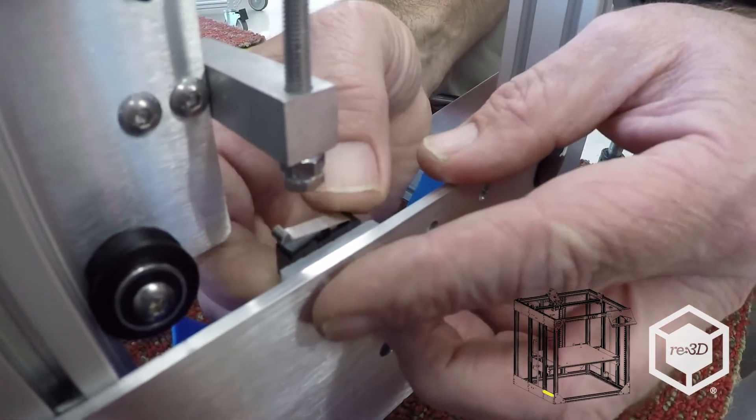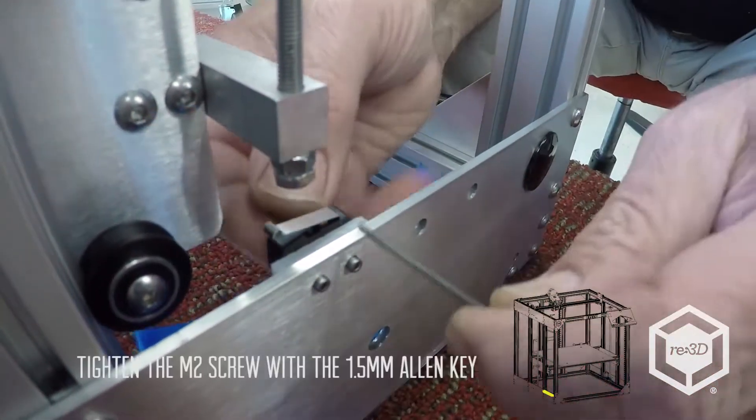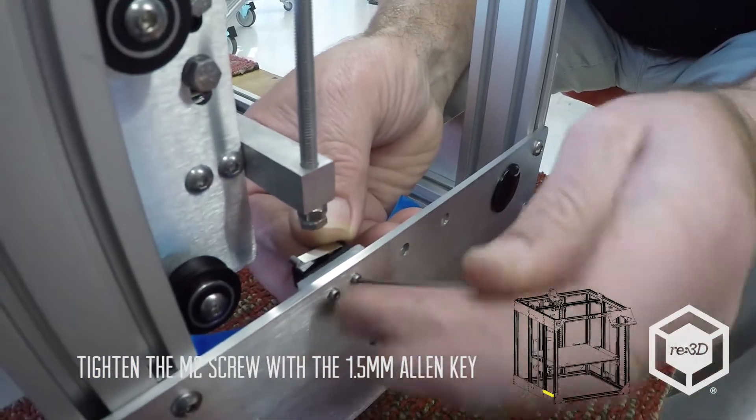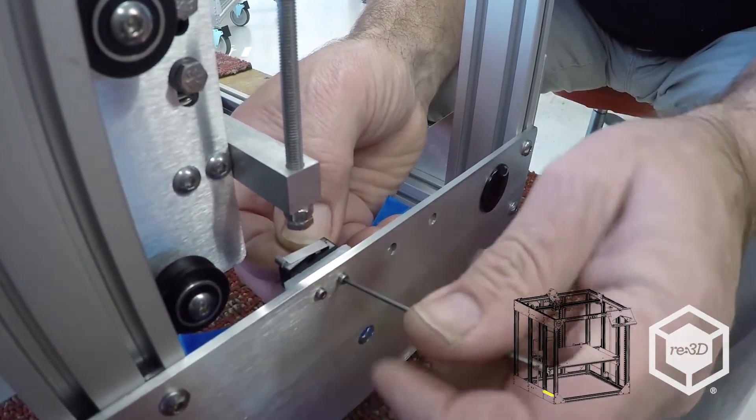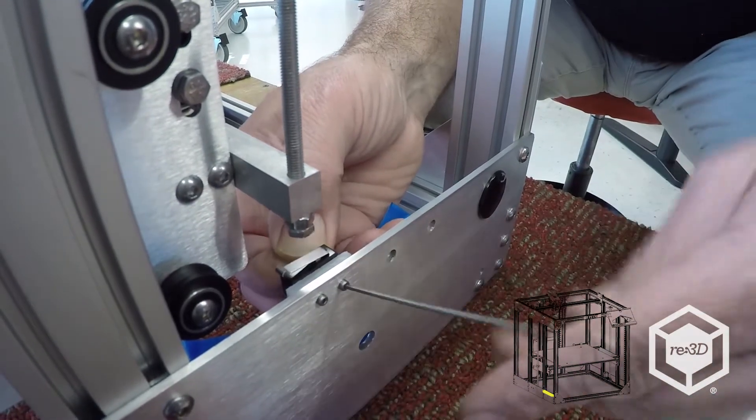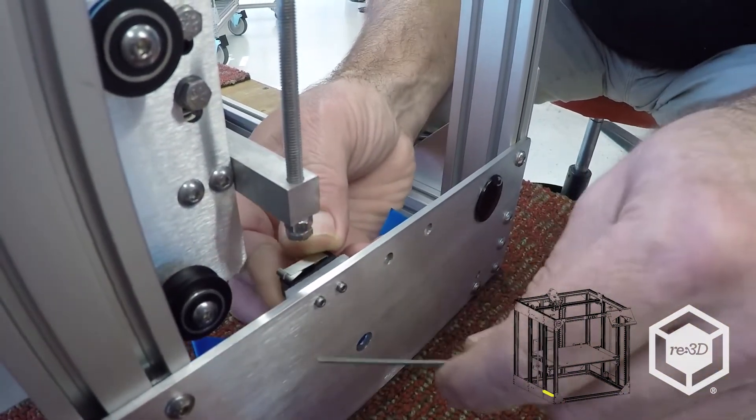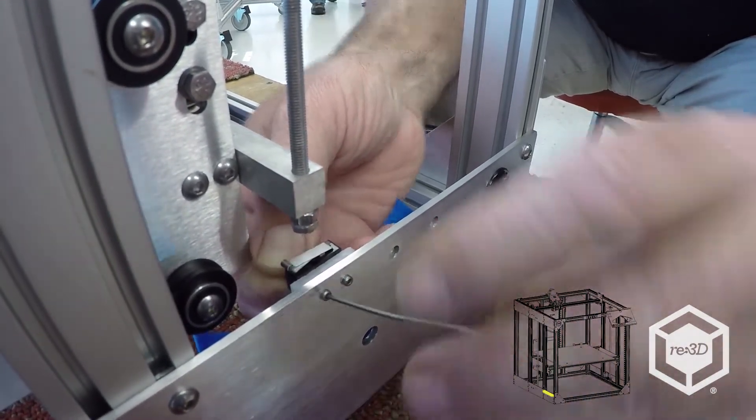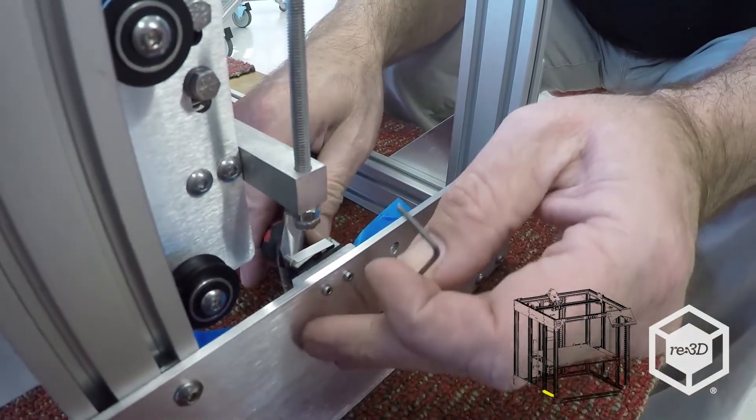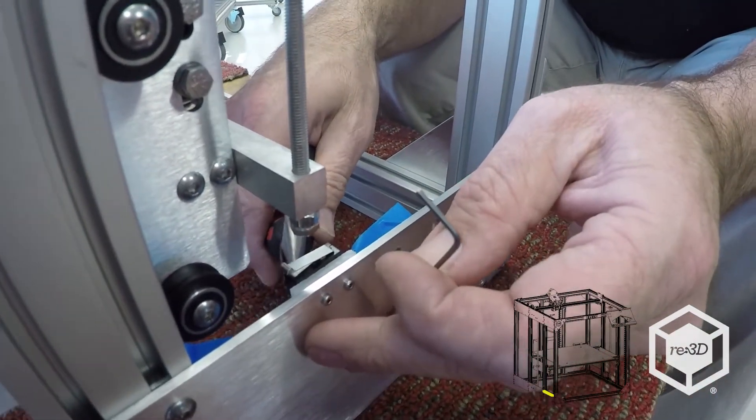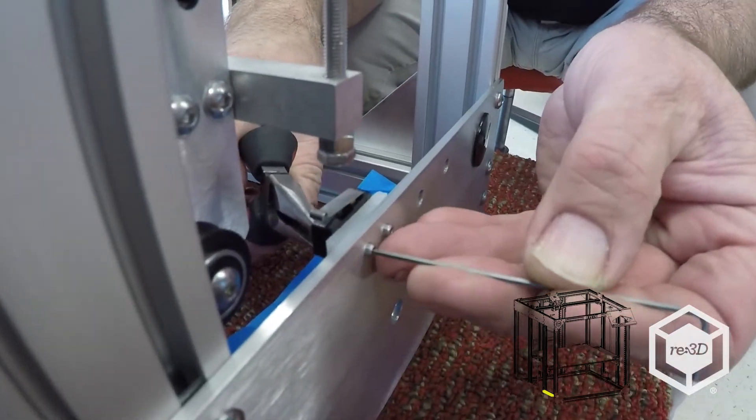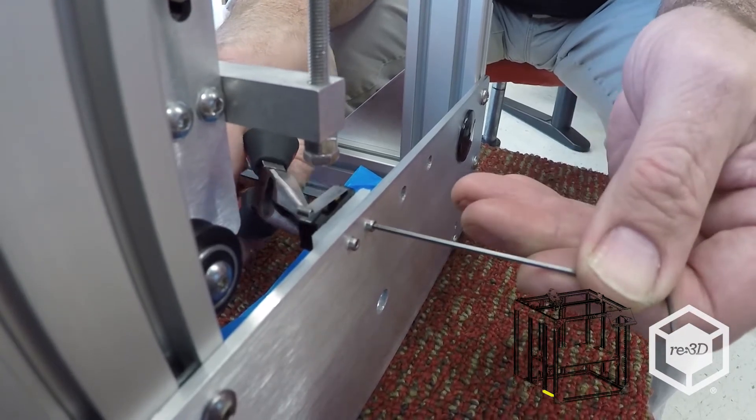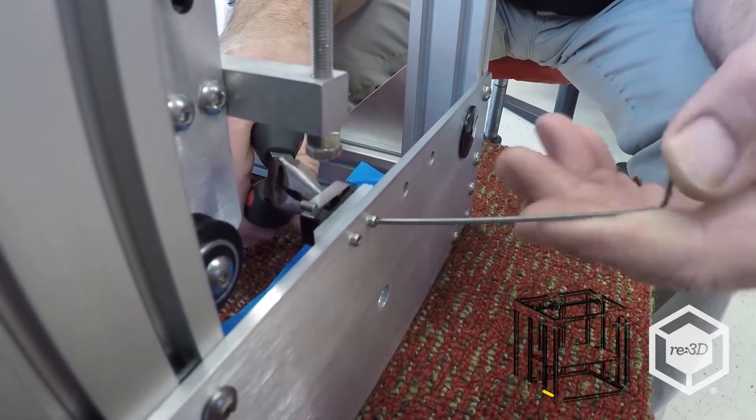You want to get the limit switch pretty tight because you don't want it to come loose. You're counting on that to keep the table from crashing into the motors if it ever goes all the way down. Take some needle nose and grab the nut. That should be sufficient.